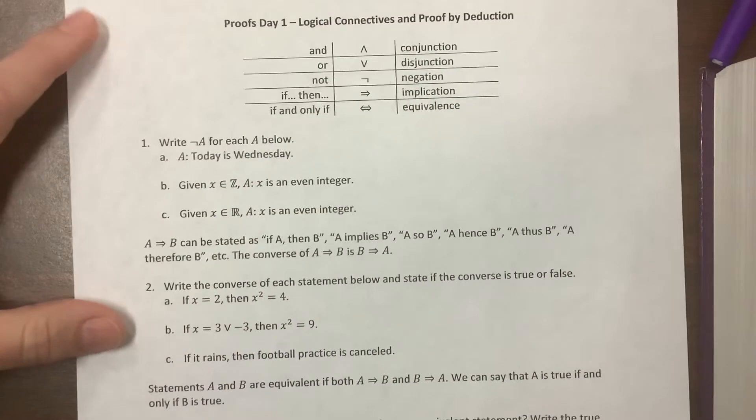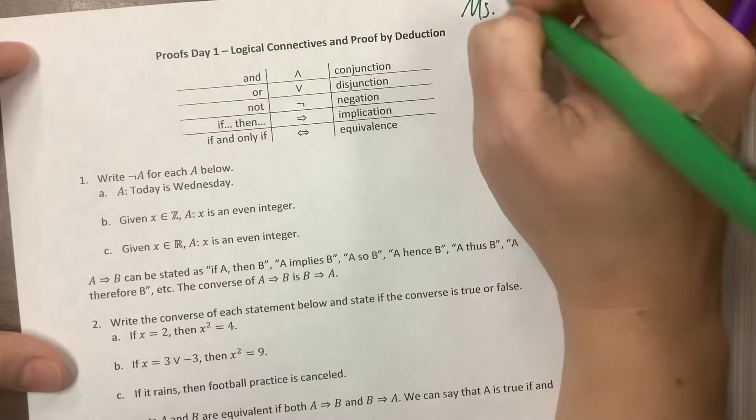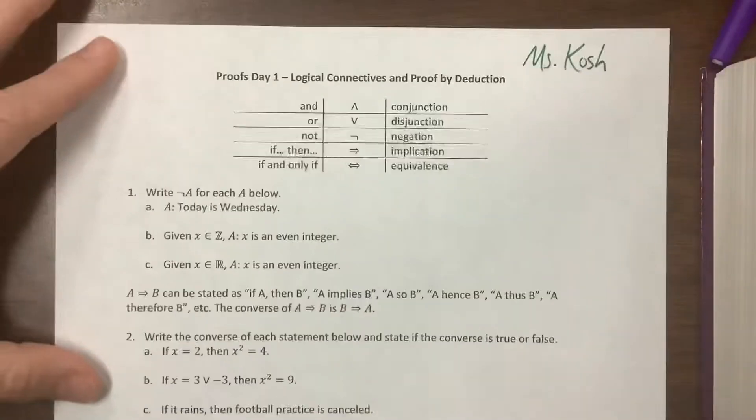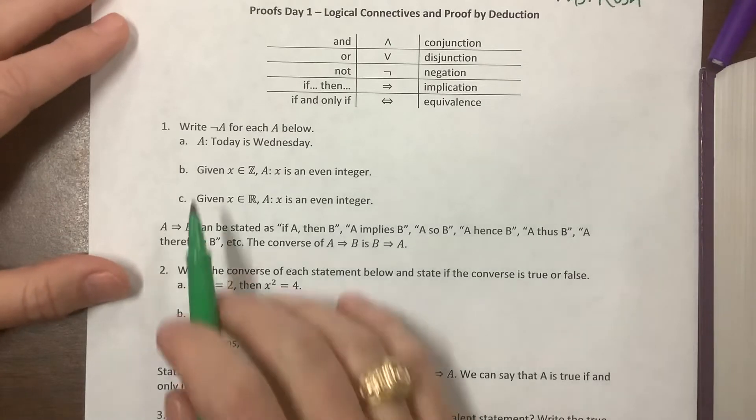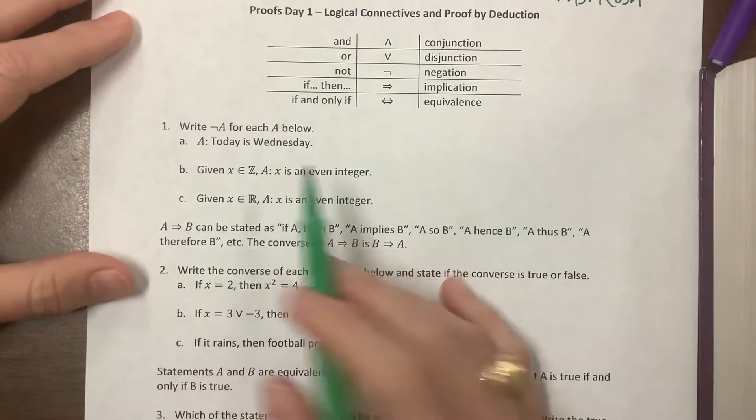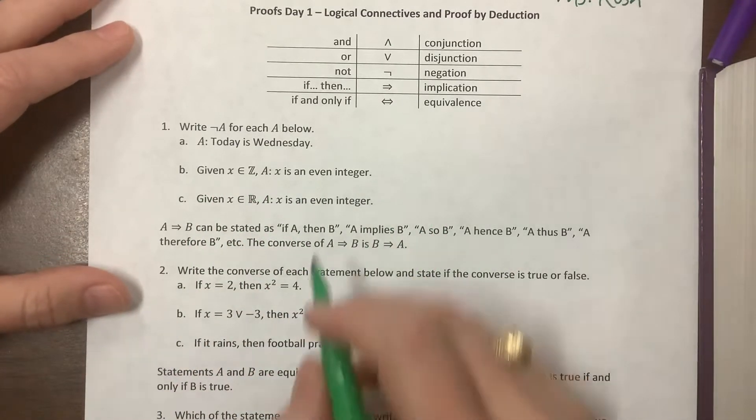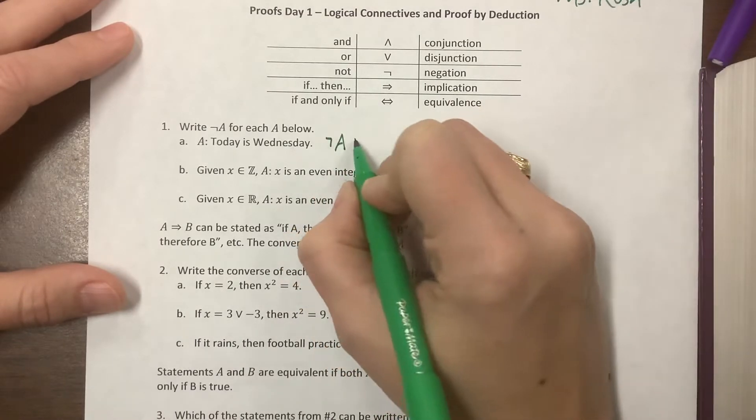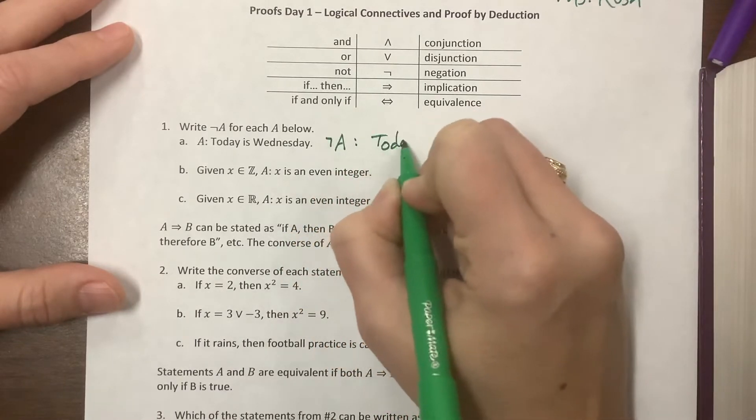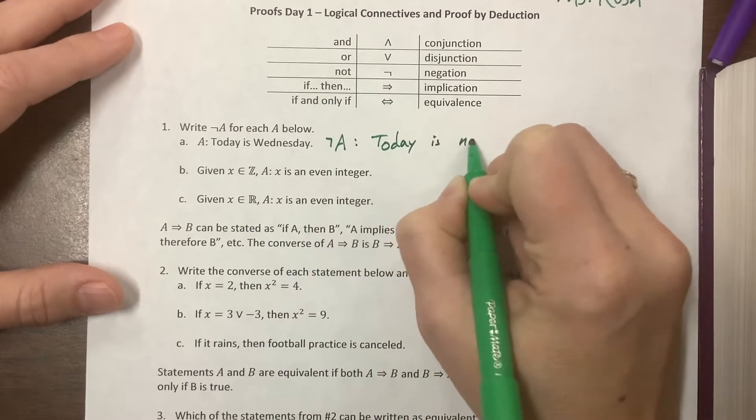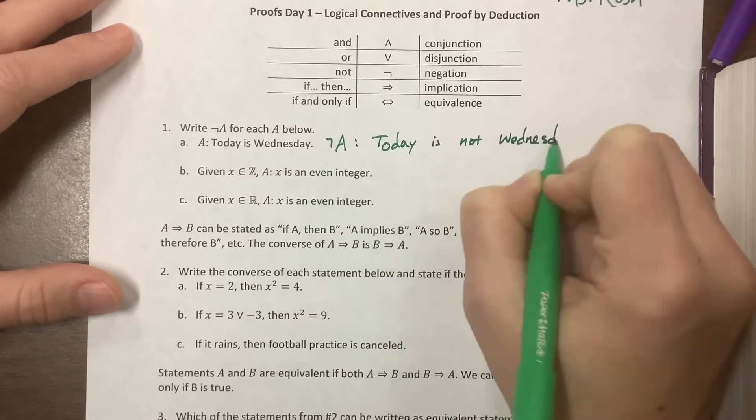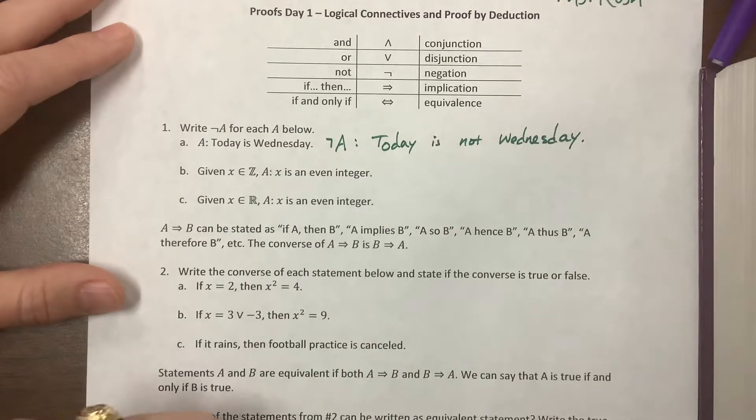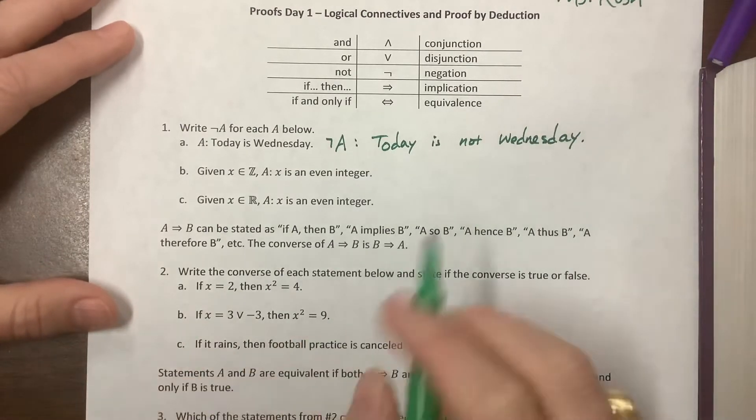The first thing, which I'm going to scan and post, says today is Wednesday. They're asking us to negate that statement. So we say 'not A' is going to be 'today is not Wednesday.' I'm making this on a Tuesday, so it's not Wednesday anyway.